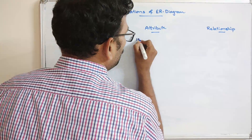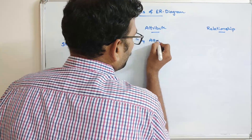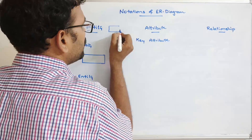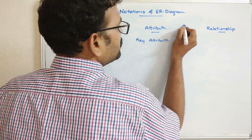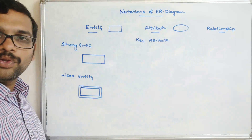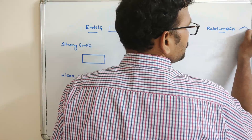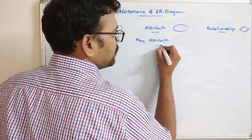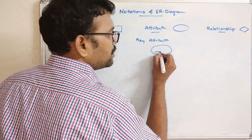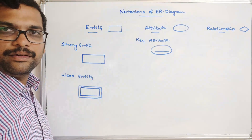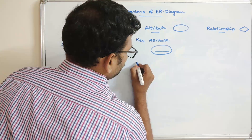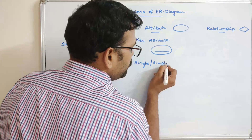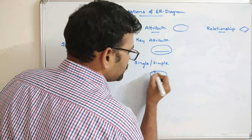For attributes: a general attribute is represented as an oval or ellipse. A relationship is represented as a rhombus or diamond symbol. A key attribute is represented as an oval with the attribute name underlined. A simple or single attribute is represented as a normal ellipse.